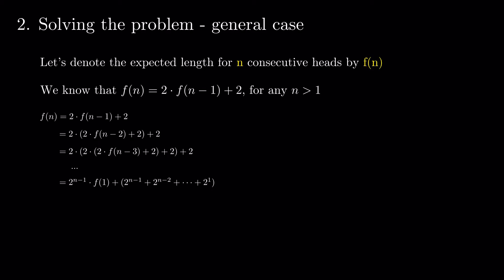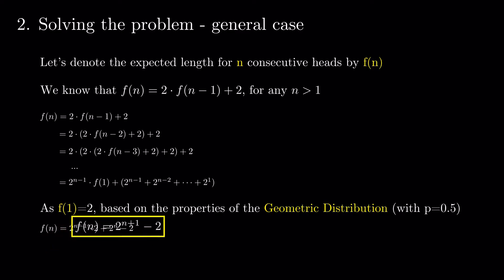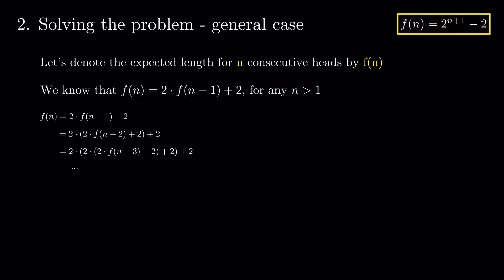It's easy to see that f(1) is 2, since we expect to have to make two tosses to see one head. This gives the general form for f(n) as 2 to the power of n plus 1 minus 2. This also gets the same result for f(3) as we got before.